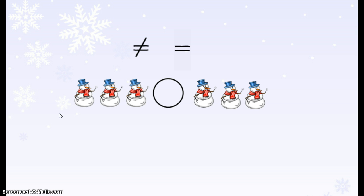I'm going to count how many snowmen are on each side and decide if they're equal or unequal. I count 1, 2, 3 snowmen on one side, and I count 1, 2, 3 snowmen on the other side. Three snowmen is the same as 3 snowmen, so they're equal. Equal means the same.